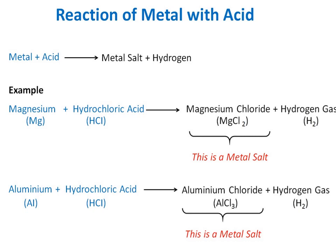Let me take two examples. First, magnesium: Mg + HCl (hydrochloric acid) gives MgCl₂ (magnesium chloride, which is a metal salt) and H₂ (hydrogen gas). This is the reaction shown in the diagram.